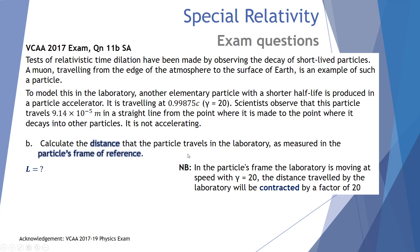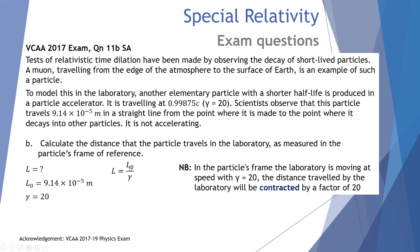The second part: calculate the distance the particle travels in the lab as measured in the particle's frame of reference. In the particle's frame, the laboratory is moving away with a gamma of 20. The distance traveled by the laboratory will be contracted by a factor of 20. Using the length contraction equation — contracted length equals proper length divided by gamma — with proper length 9.14 × 10⁻⁵ meters and gamma of 20, the contracted length from the particle's perspective is 4.57 × 10⁻⁶ meters.